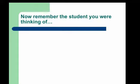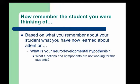Now remember the student you are thinking of. Based on what you remember about your student and what you've now learned about attention, what is your neurodevelopmental hypothesis? Go beyond just attention. Think of those three functions — mental energy, processing controls, production controls. Where do the true breakdowns lie for the student you are imagining? Where are those functions working and not working?